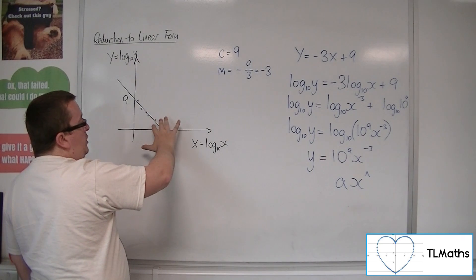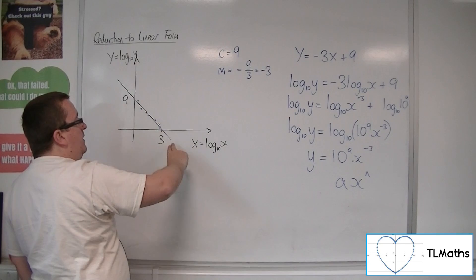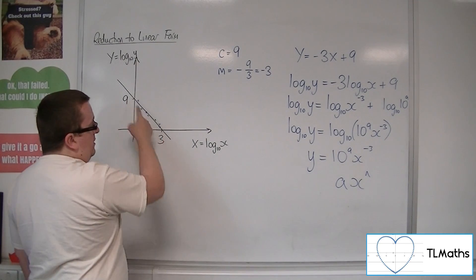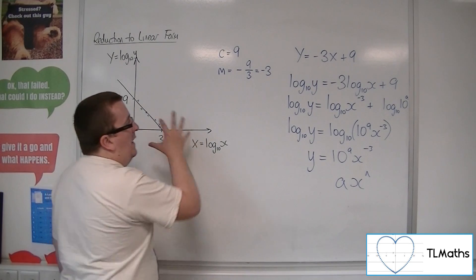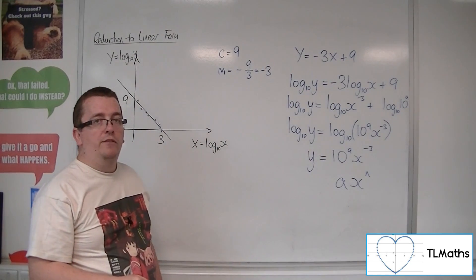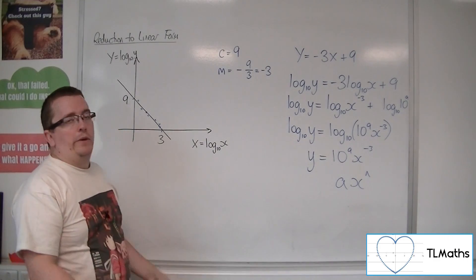We plotted the new data points, which looked like they were going in a straight line. We estimated the gradient and Y-intercept of the line. In this case, I found them exactly. And then we could work our way back to the equation of the original curve. And that's the process that we're going through here.